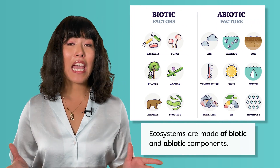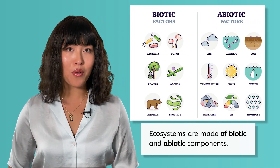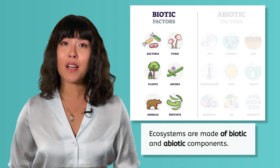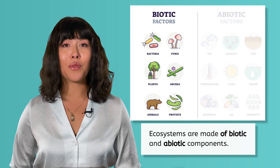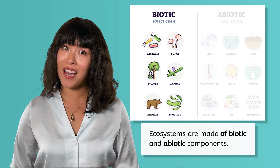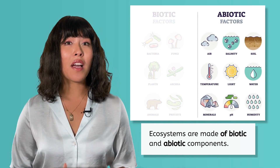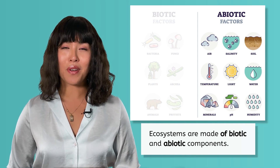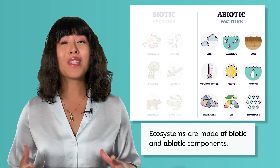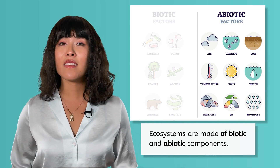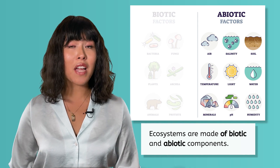As we learned in our last lesson, all components in an ecosystem can be divided into two groups: biotic and abiotic components. Biotic, or living, components include the animals, plants, and bacteria that live in the ecosystem, while abiotic, or non-living, components include the air, water, sun, temperature, and soil.